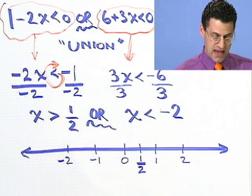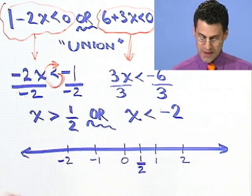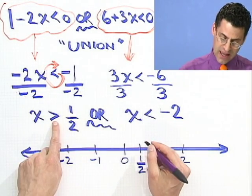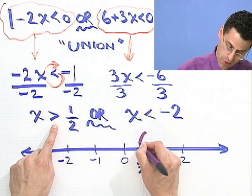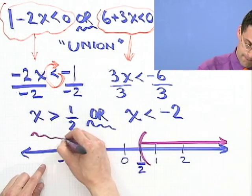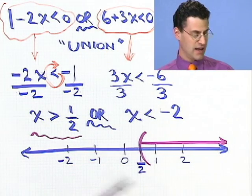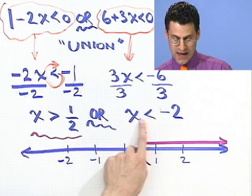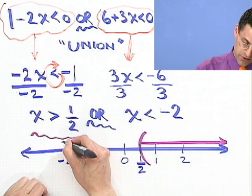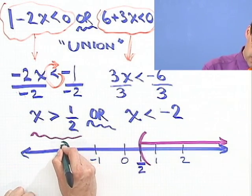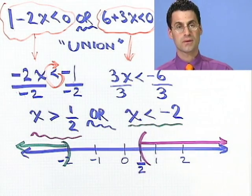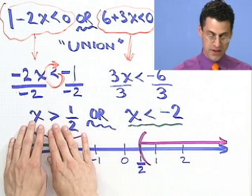Okay, so what do the graphs of these things look like? x is larger than a half. That means that I look at all the points to the right of a half. And I don't include a half. I have no equal sign there. So I put an open parentheses pointing this out like this. So there's a solution to that. What's the solution to x is less than negative 2? Well, I don't include negative 2, but I include all points to the left.